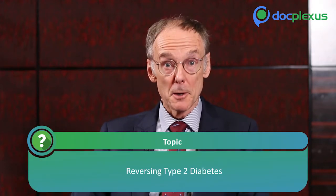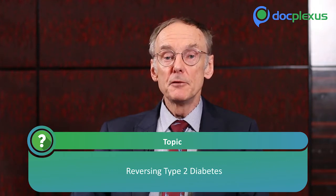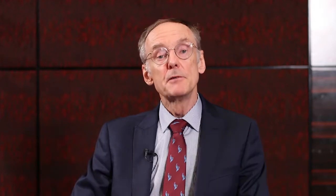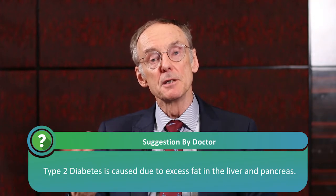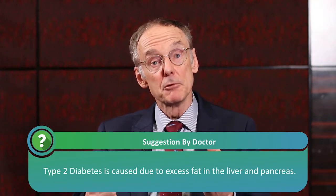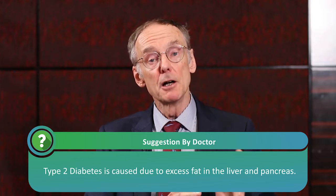I'd like to talk to the title 'Reversing Type 2 Diabetes in the Real World' because this is a practical topic. It has been a research topic, and over the last 15 years or so I've demonstrated that type 2 diabetes is actually caused by excess fat in the liver and in the pancreas. In the liver it causes insulin resistance; in the pancreas it prevents the acute insulin secretion we all rely on after meals.